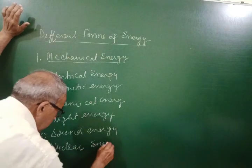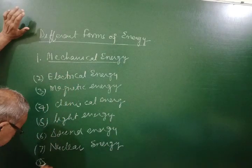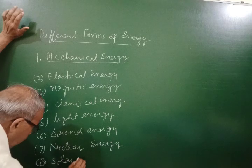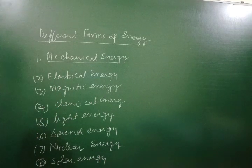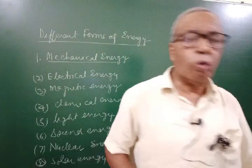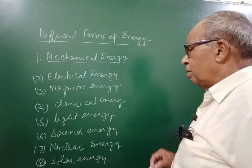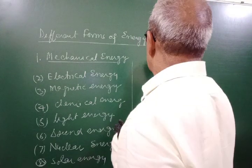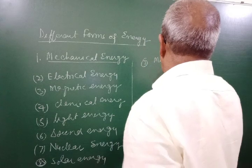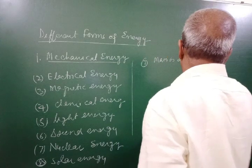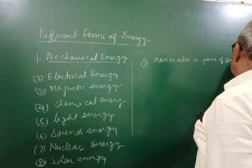And eight, we call it solar energy. Solar energy comes in different forms — light energy and heat energy. And even mass is also a form of energy.